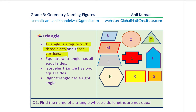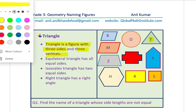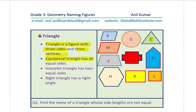There it is — 'T' for triangle. Now this particular triangle is special: it is called an equilateral triangle. An equilateral triangle has all equal sides. All three sides are of the same length. The second type is an isosceles triangle, which has two equal sides only.